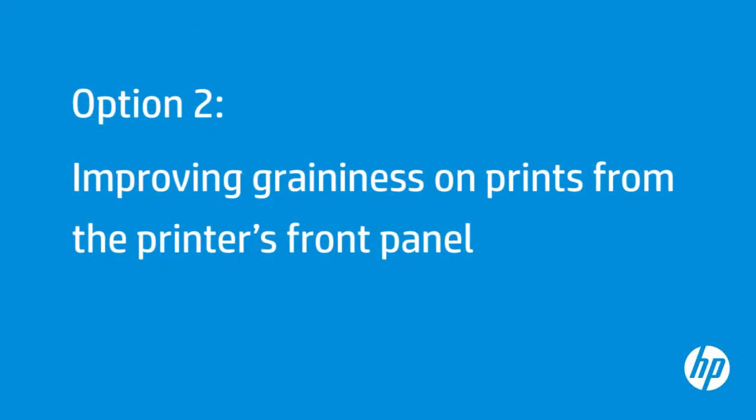In this option, we will show you how to adjust printing parameters from the printer's front panel to reduce graininess on your prints. Printing parameters can be changed from the front panel during printing. However, if you want to change the printing parameters for future prints, the media profile must be changed from the RIP.